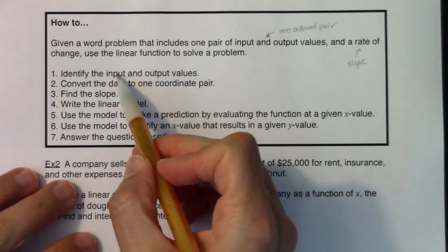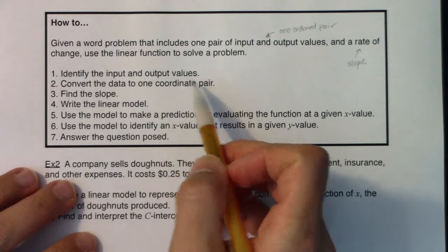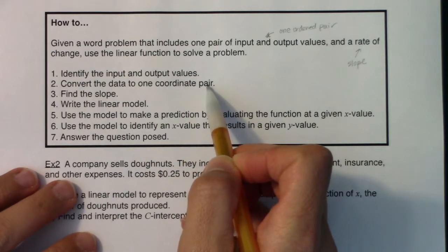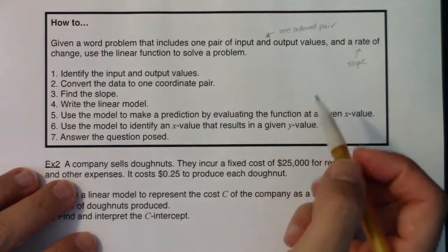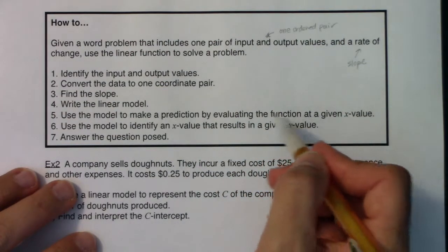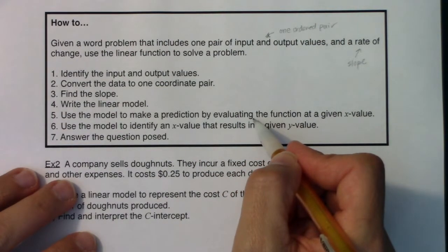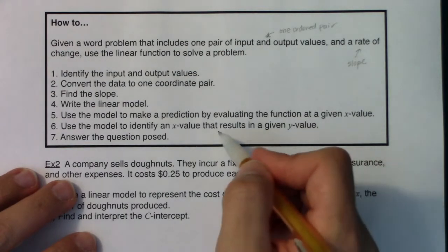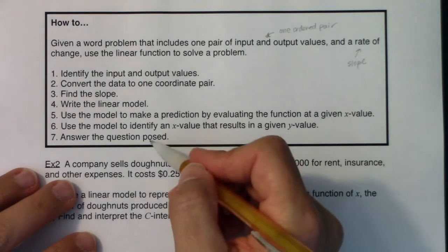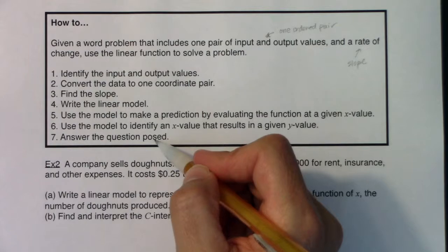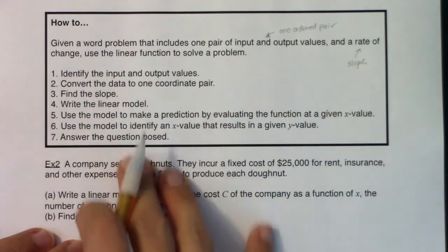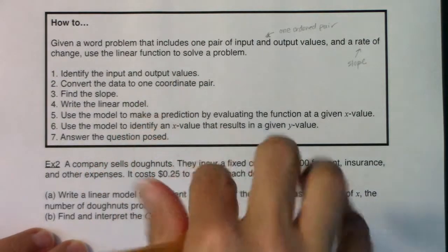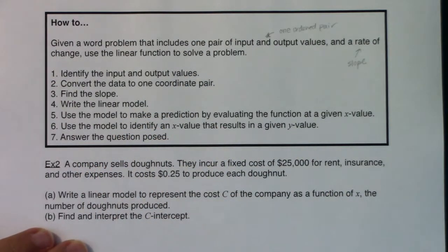So just like last time, we'll identify the input and output values, we'll write them as an ordered pair, we'll have the slope, and with that slope we'll write our linear model. Either I'll give you an x value and ask you to predict a y value, or I'll give you a y value and ask you to predict an x value. And then always just make sure that you're answering all the questions that are asked of you. Make sure I didn't throw any other extra questions in there.